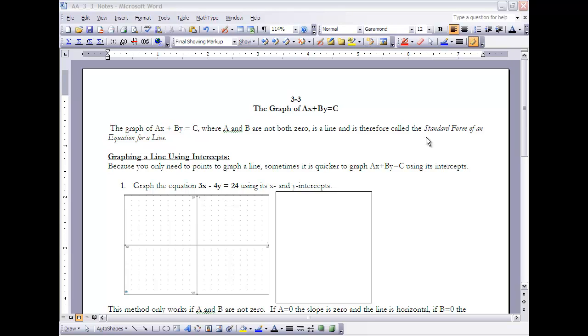We can also graph a line in that standard form, and the way that we do that is by using its x and y intercepts. Because we know that when we graph a line, we only need two points. If we can figure out what the x intercept and the y intercept is, which we can very easily from the standard form, we can quickly graph the line without having to put it into slope-intercept form.